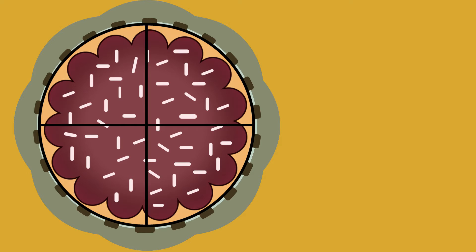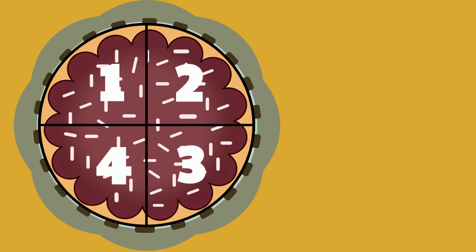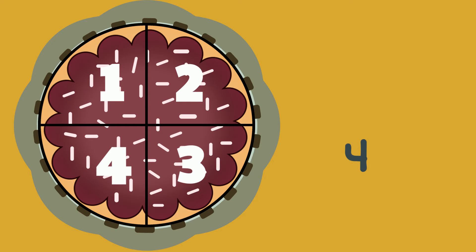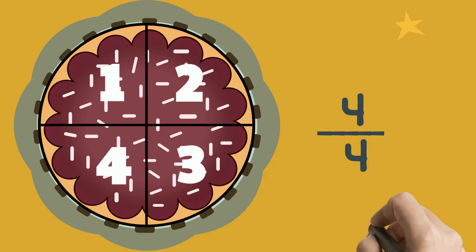For example, we can take this whole cake and cut it into four equal pieces. If there are four equal pieces, that's our denominator. We still have four pieces, so this fraction is four-fourths.